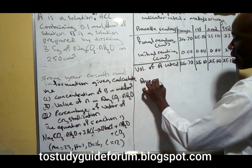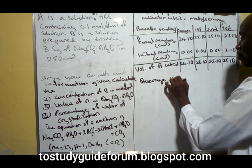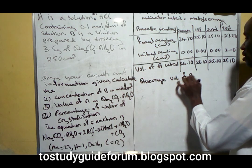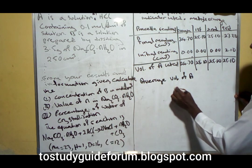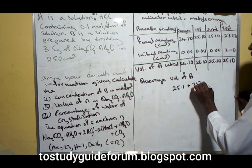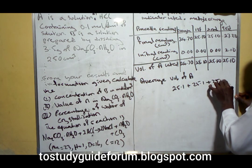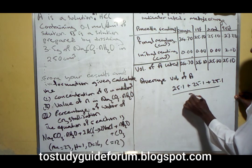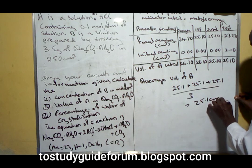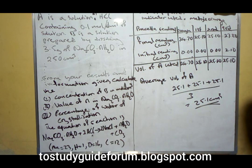The average volume of acid would be 25.1 plus 25.1 all over 3, which gives us 25.1 cm³. Now we have what we are looking for.